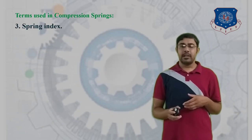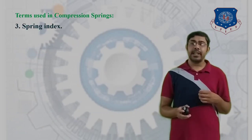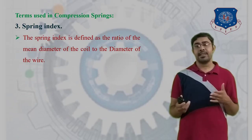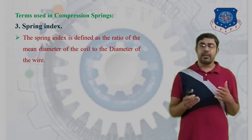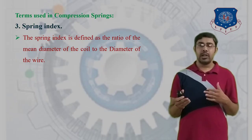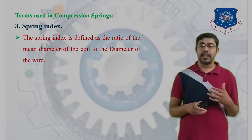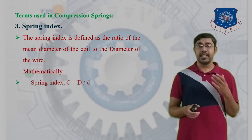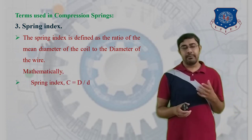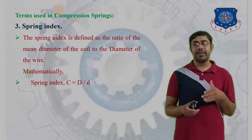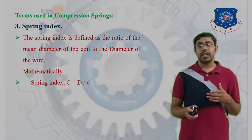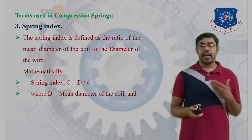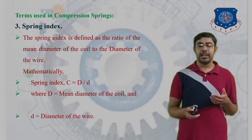The next terminology is the spring index. The spring index is defined as the ratio of the mean diameter of the coil to the diameter of the wire. Mathematically, spring index C = D/d, where capital D is the mean coil diameter and small d is the wire diameter.